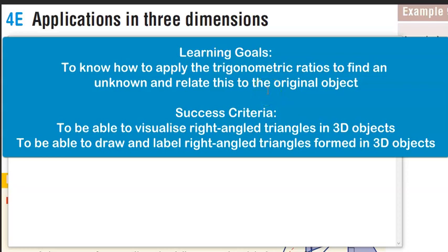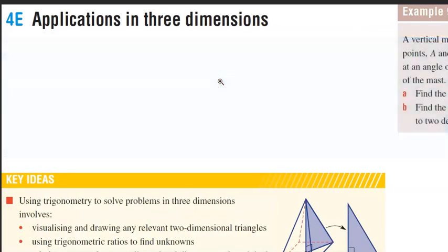Hey there, Year 9, Mr. Herman here. This is Exercise 4E: Applications in Three Dimensions. The learning goals for this lesson are to know how to apply the trigonometric ratios to find an unknown and relate this to the original object. The success criteria are to be able to visualize right angle triangles in 3D objects and to draw and label right angle triangles formed in 3D objects.